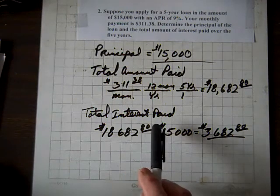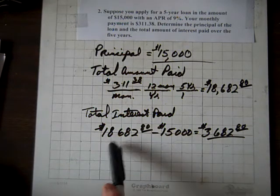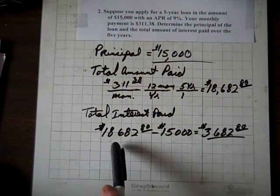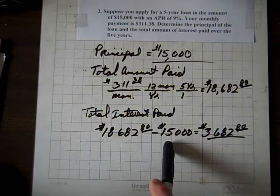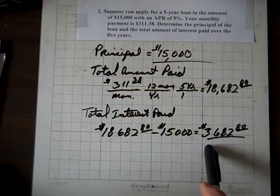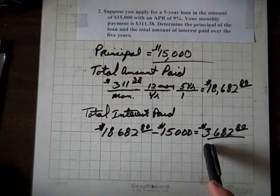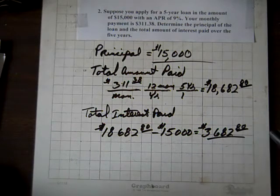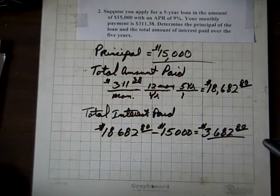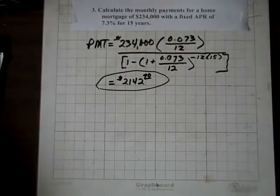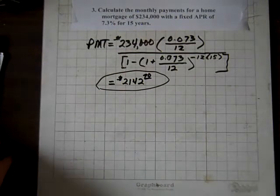So the total interest paid is going to be the difference of the total amount paid and the principal. And that difference is $3,682.80. So we're done with that one.